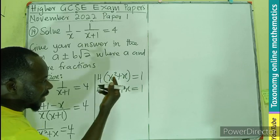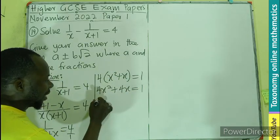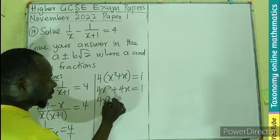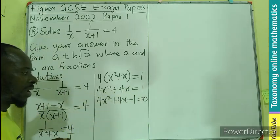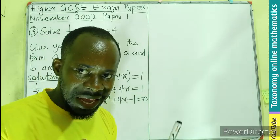So the x is squared, the x is single. So let's bring in the 1. So 4x squared, 4x minus 1 equals to 0. This becomes a quadratic equation.